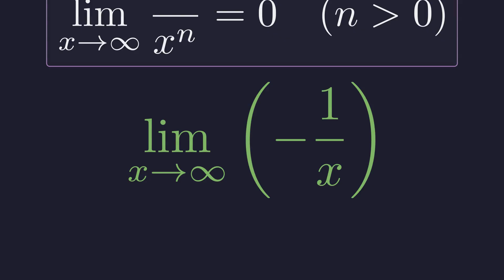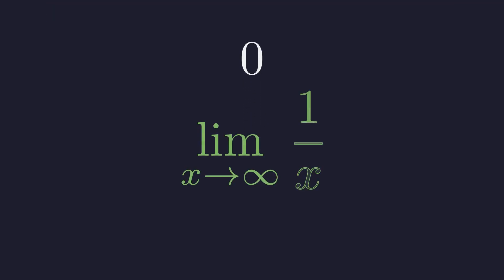Let's evaluate the limit of our lower bound negative 1 over x. Based on our rule, as the denominator becomes infinitely large, the fraction approaches zero. Similarly, let's evaluate the limit of our upper bound positive 1 over x. For the exact same reason, this limit is also zero.